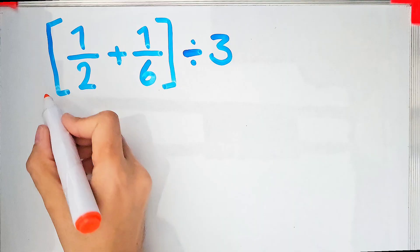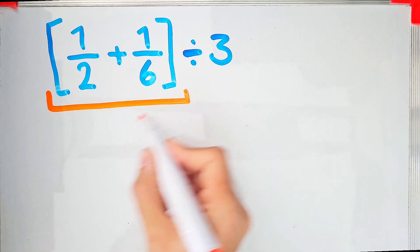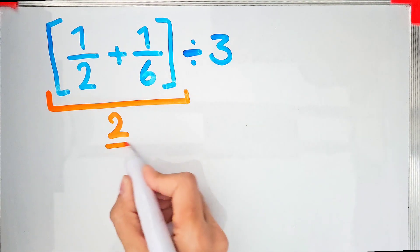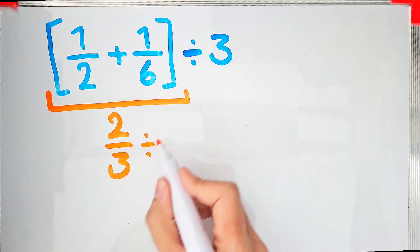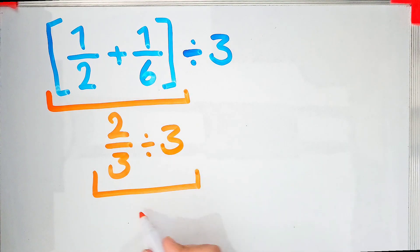In this step we have a fraction that is divided by a number. To solve this question we need to follow a rule that's called KCF. KCF means keep the first fraction as it is, change the sign, then flip the second fraction or number. We keep the first fraction as it is, after that we change the division sign to the multiplication sign.